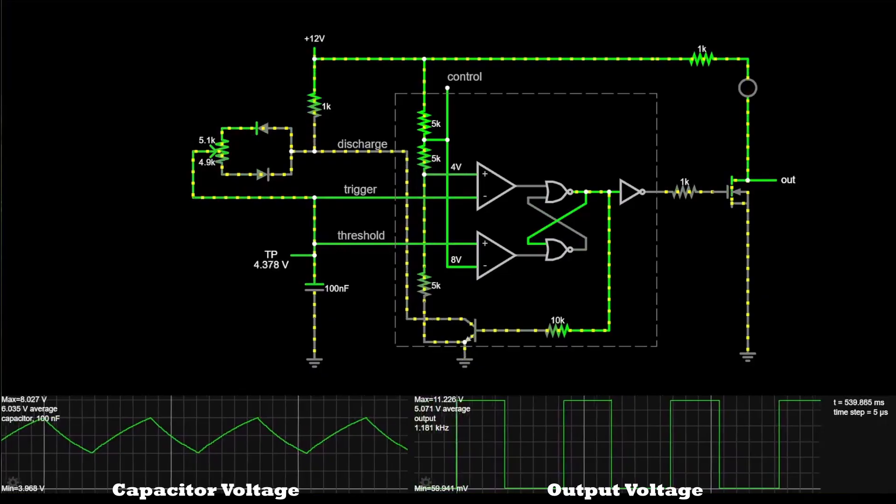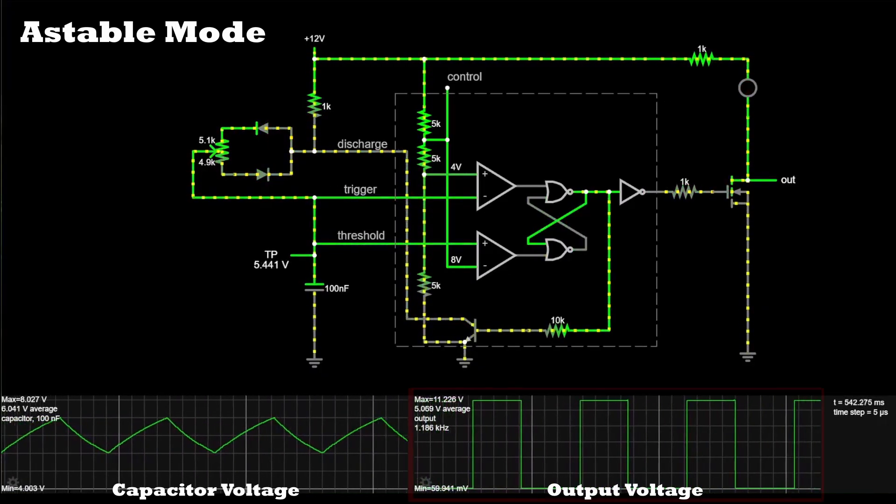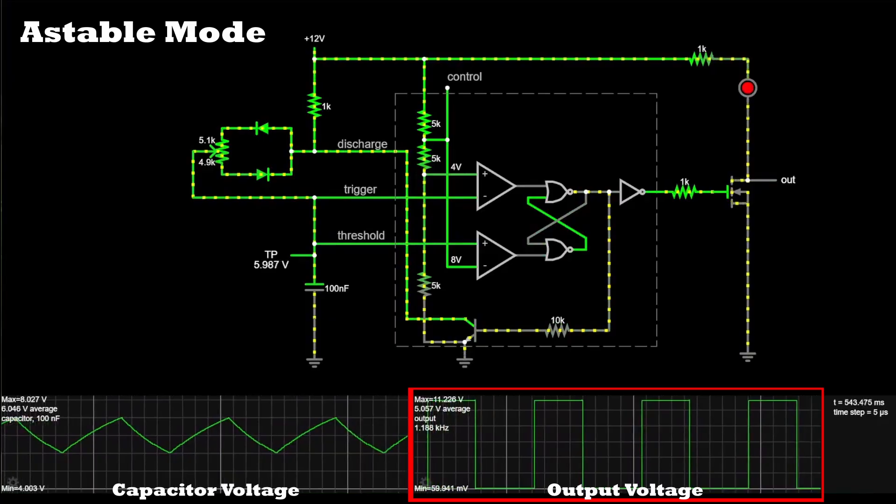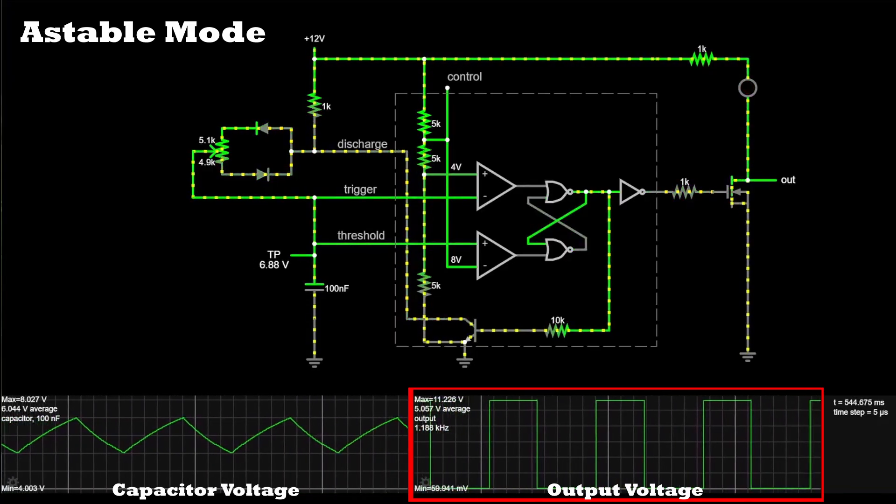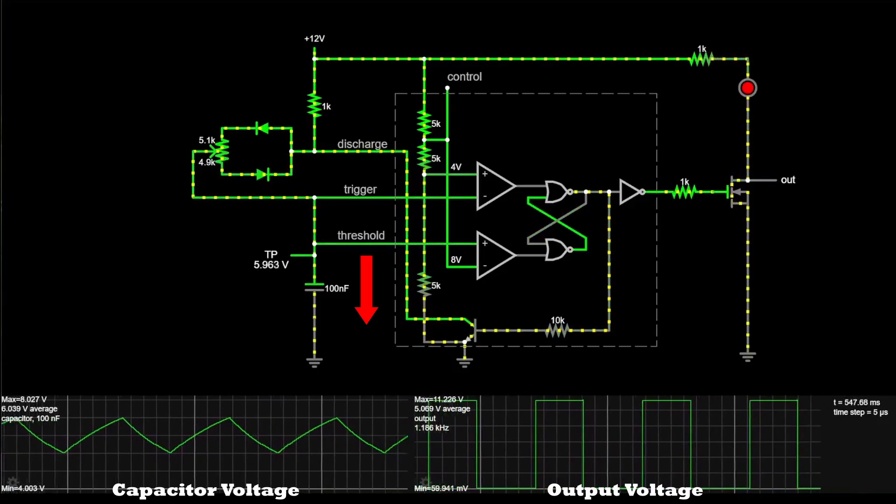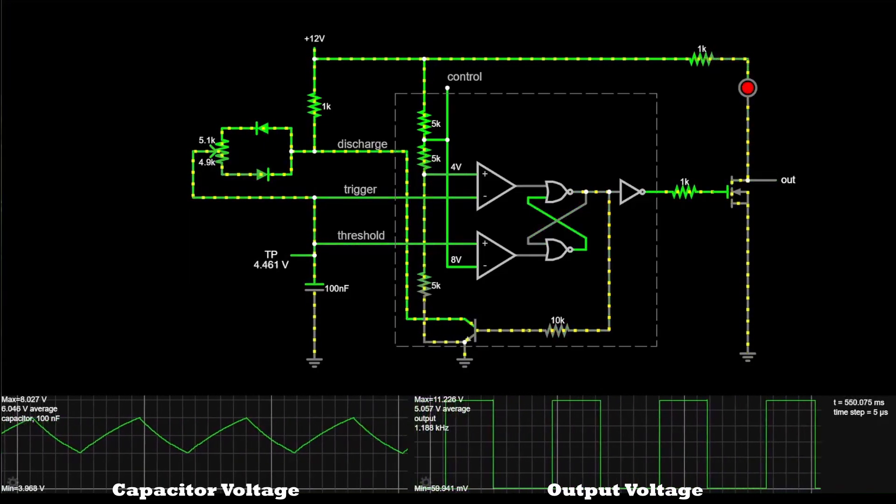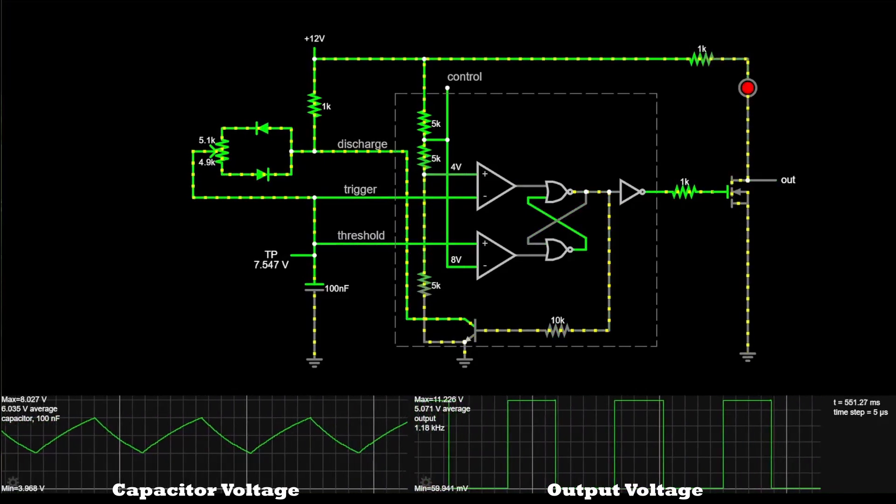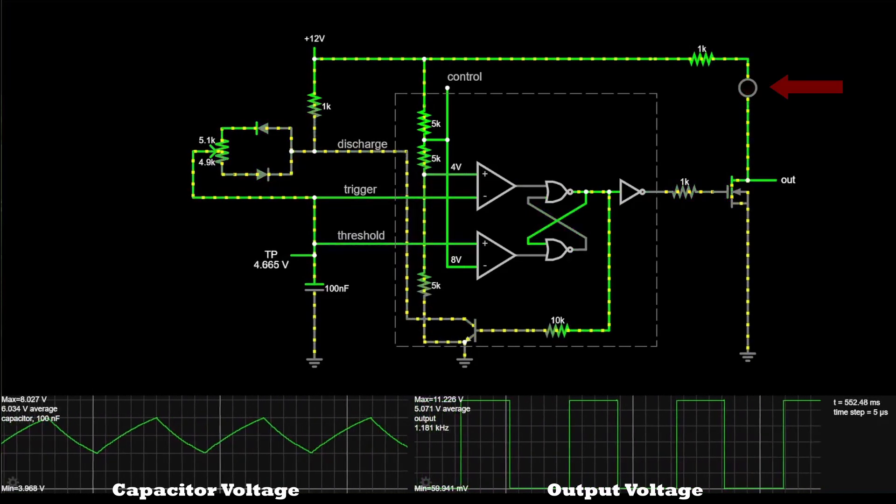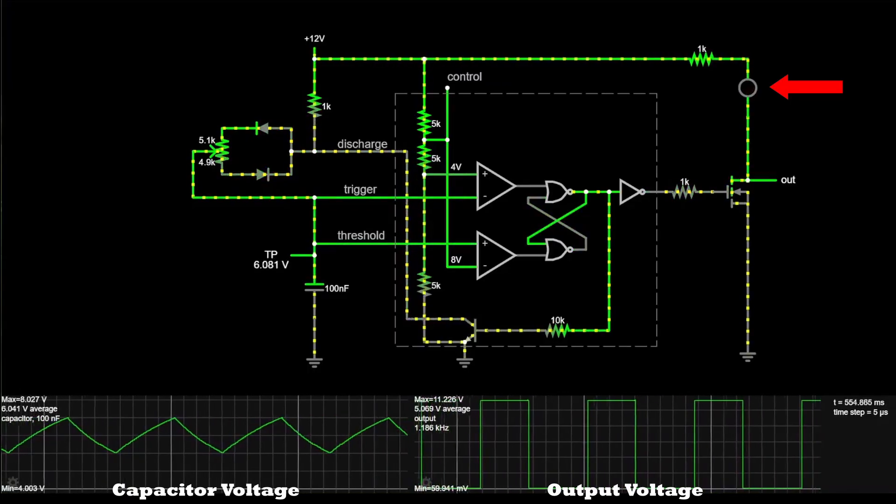For this circuit, the 555 timer is operating in astable mode, meaning the output is generating a continuous square wave that alternates between the high and low states indefinitely. This works by charging and discharging the capacitor rapidly. Keep in mind here that this simulation is operating much slower than it would in reality. The frequency of the output is currently set to 1kHz, meaning that this LED would actually be turning on and off 1000 times per second.